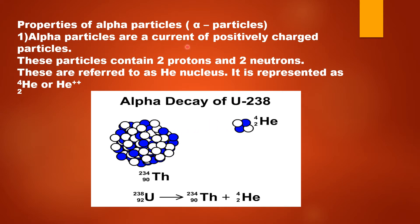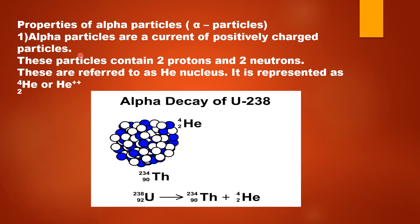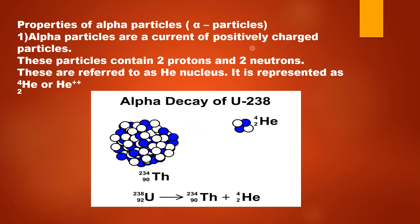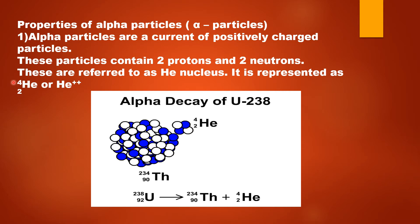Alpha particles are a current of positively charged particles. Why positively charged? Because alpha particles release two protons and two neutrons. Protons carry positive charge and neutrons carry no charge. So the charge on the nucleus becomes positive because of the presence of positively charged protons. Alpha particles are a current of positively charged particles. They are referred to as helium nucleus and represented as the nucleus of helium with atomic number 2 and atomic mass number 4, also shown as a current of helium particles written as helium with two positive charges.